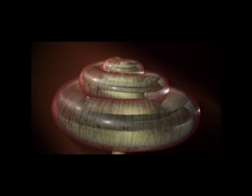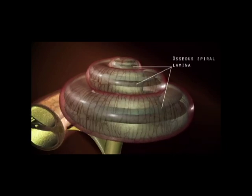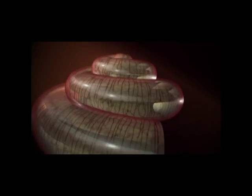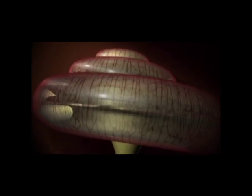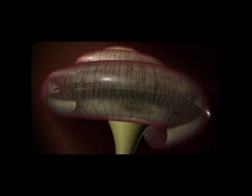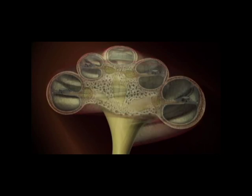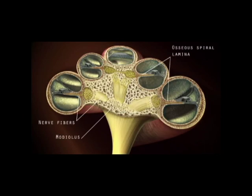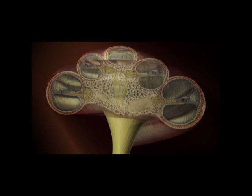A bony shelf called the osseous spiral lamina coils around the modiolus like the threads of a corkscrew, projecting outwards towards the outer wall of the cochlea. The bone of the osseous spiral lamina, like that of the modiolus, is porous, allowing nerve fibers and blood vessels to travel within.